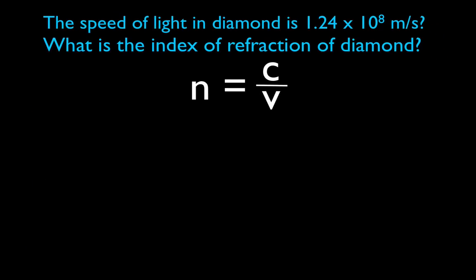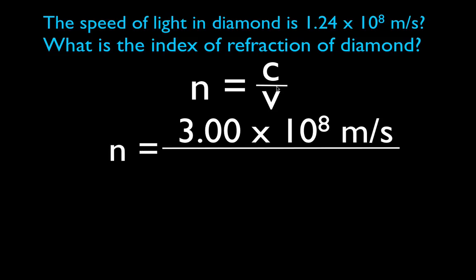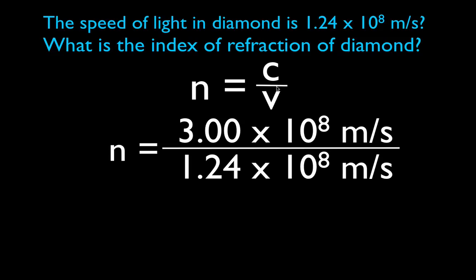Let's do a couple of calculations. The speed of light in diamond is 1.24 times 10 to the eighth meters per second — what is the index of refraction of diamond? Using our equation, N equals the speed of light in a vacuum, 3.0 times 10 to the eighth, divided by the speed of light in diamond. The units cancel and we get N equal to 2.42. You often don't see indices of refraction higher than 2, so diamond is a very optically dense material and light travels quite slowly through it.